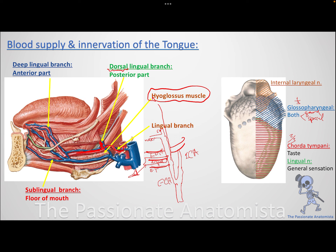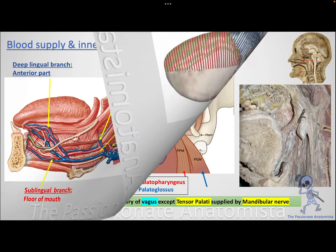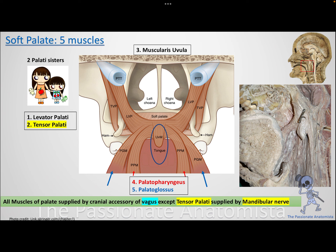Deep to the hyoglossus, the lingual artery gives three branches: the dorsal lingual branch (dorsal meaning posterior) supplying the posterior tongue; the sublingual branch supplying the floor of the mouth and sublingual salivary gland; and the deep lingual branch supplying the anterior tongue. So the tongue's blood supply comes from the dorsal lingual, deep lingual, and sublingual branches — all from the lingual artery.